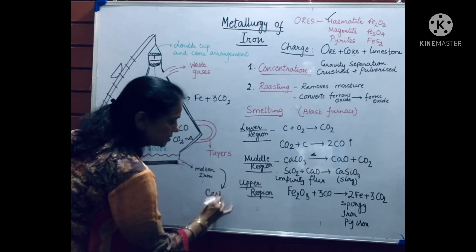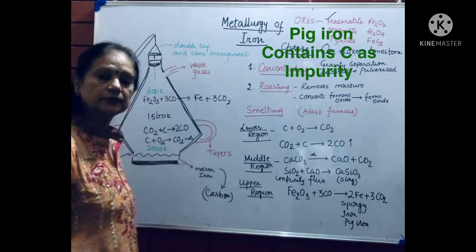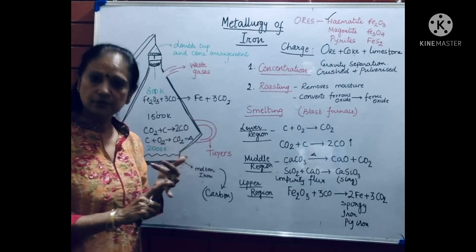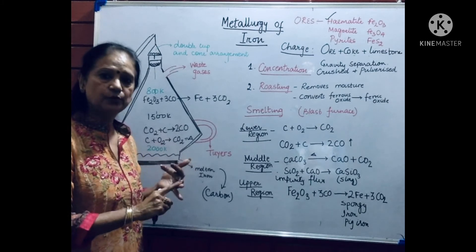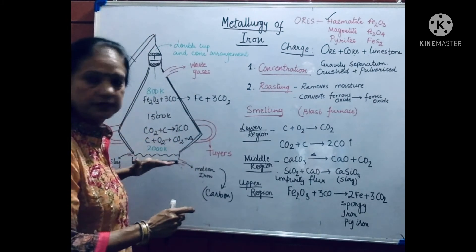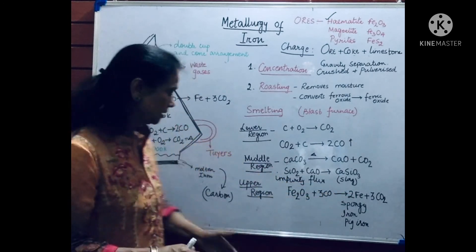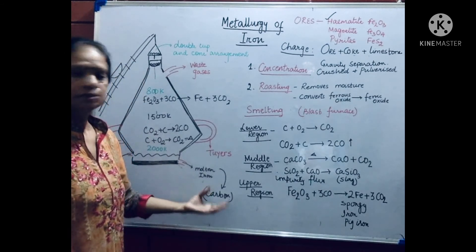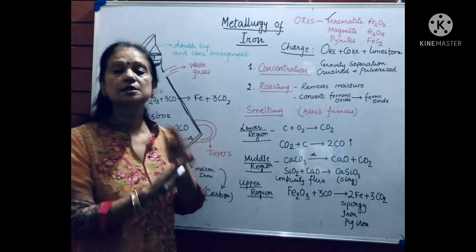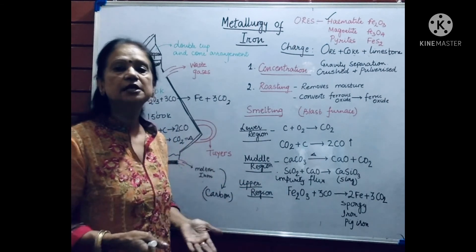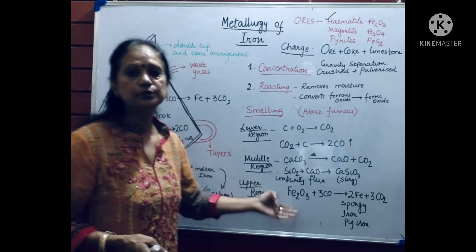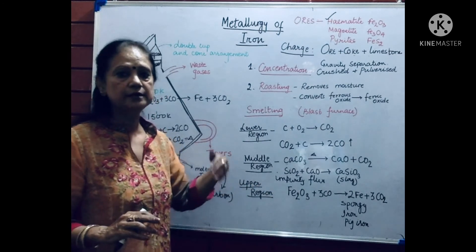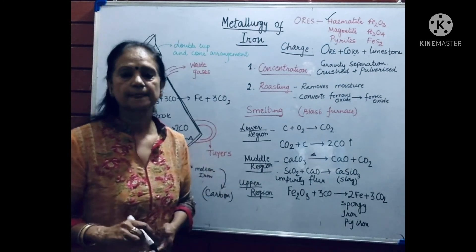This molten iron collected from the furnace is the most impure form of iron, and the major impurity present in it is carbon. The ore initially contained an impurity of sand or silica (SiO₂), which was removed as slag. The remaining impurity in the iron is carbon. The iron produced in the blast furnace is the most impure form and can hardly be used for anything. That is why industries generally convert most iron into steel.